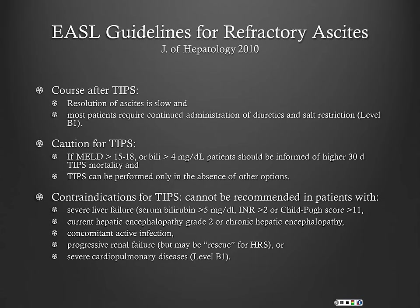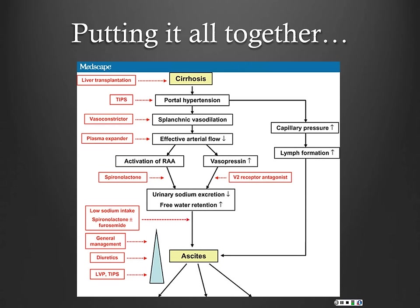If their MELD is about 15 or above, use caution — though if they're alcoholic cirrhotic, you may be able to get away with a higher MELD. TIPS should be performed only in the absence of other options, and contraindications should be observed.